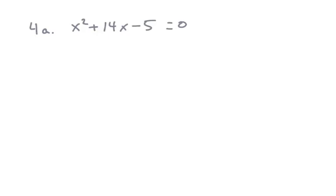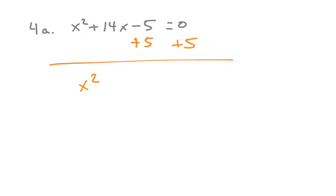Let's look at question number four: solve by completing the square. The process for completing the square is first you want to take anything that doesn't have an x with it and move it to the other side. So this leaves me with x squared plus 14x equals five.